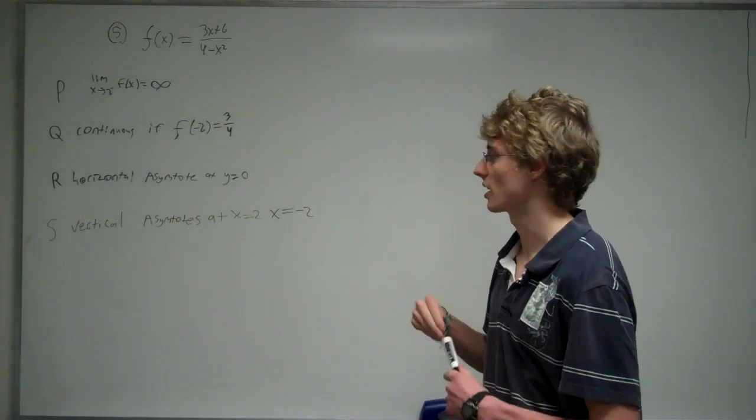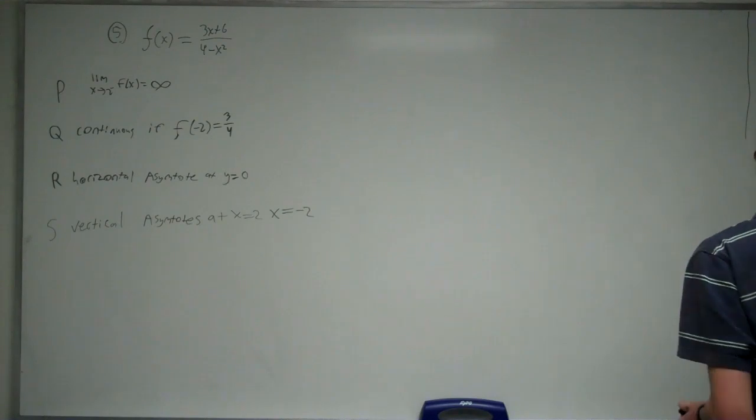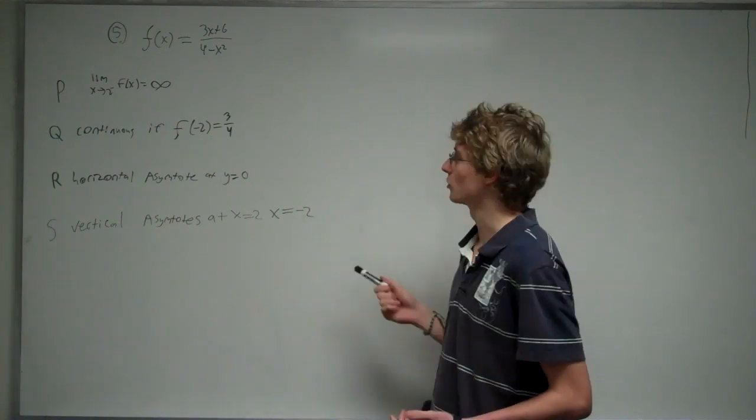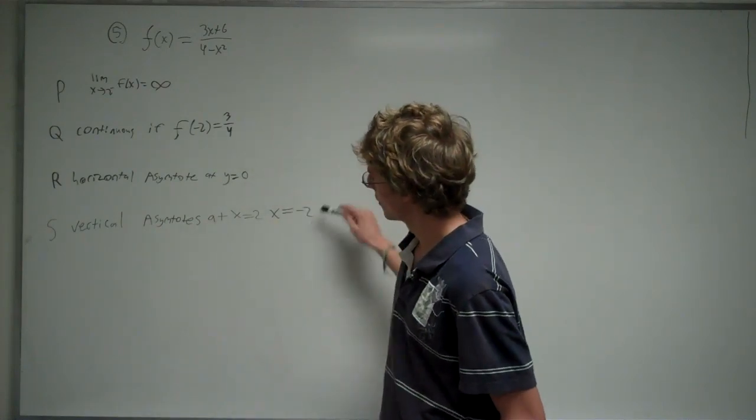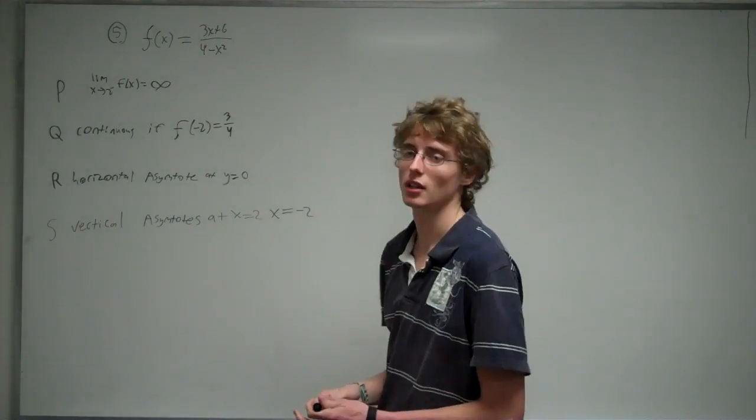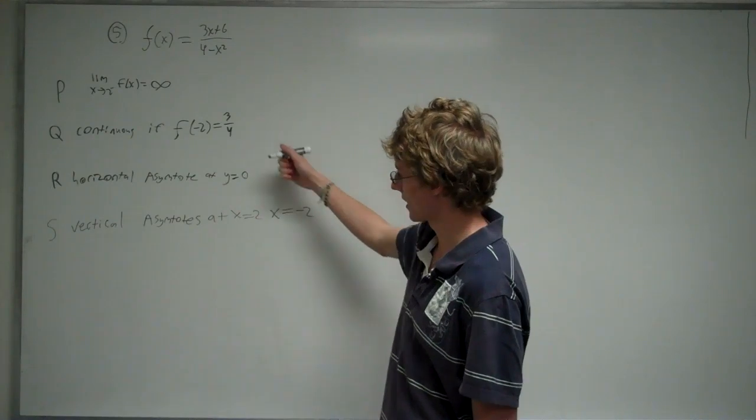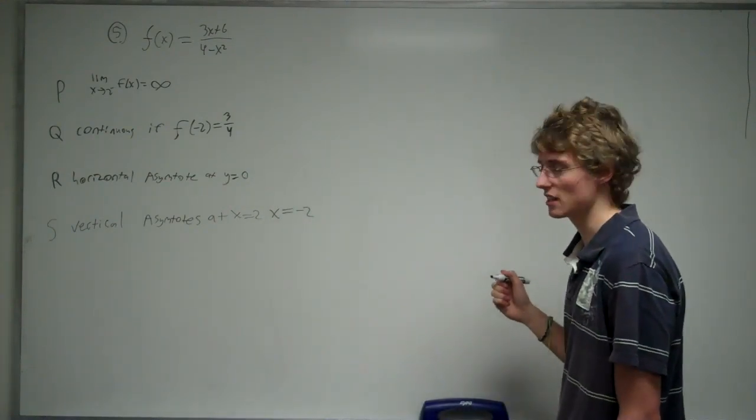This is question 5 on exam form A. The question asks us which of the following is true, and it gives us four different statements and a function. What we want to do is go ahead and prove either right or wrong each of those four different statements individually.